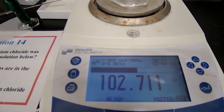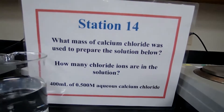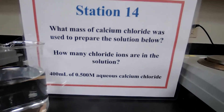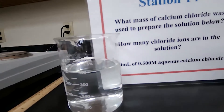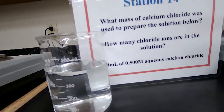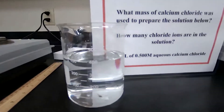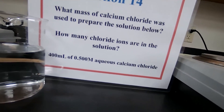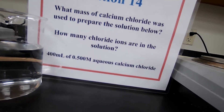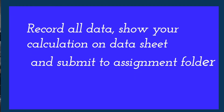For the last station, you have 400 milliliters of 0.5 molar aqueous calcium chloride, and you need to do the calculation to find the mass of calcium chloride. Record all the data and show your calculations on the data sheet before you submit.